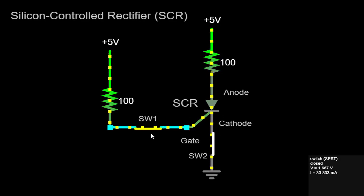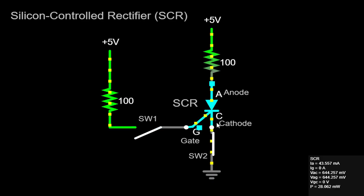This trigger voltage, also known as the gate current, causes the SCR to switch into a conducting state, allowing current to flow from the anode to the cathode.